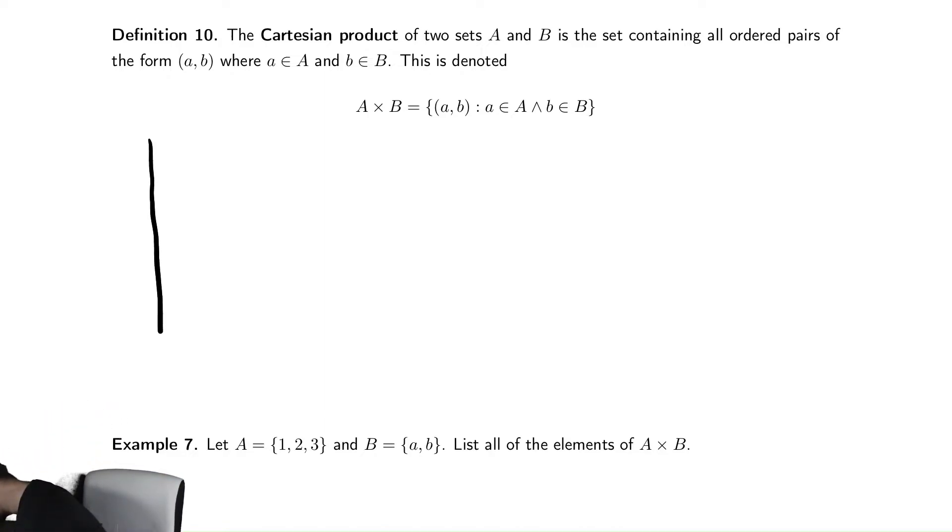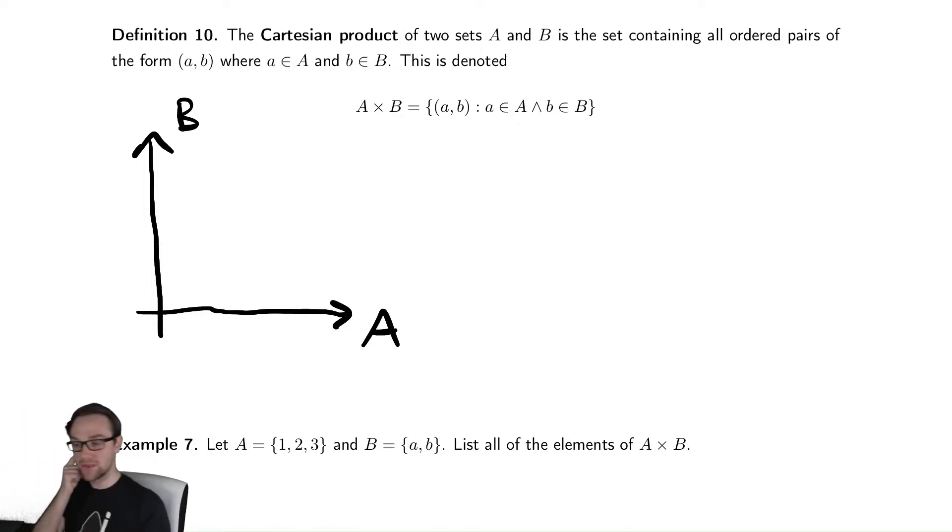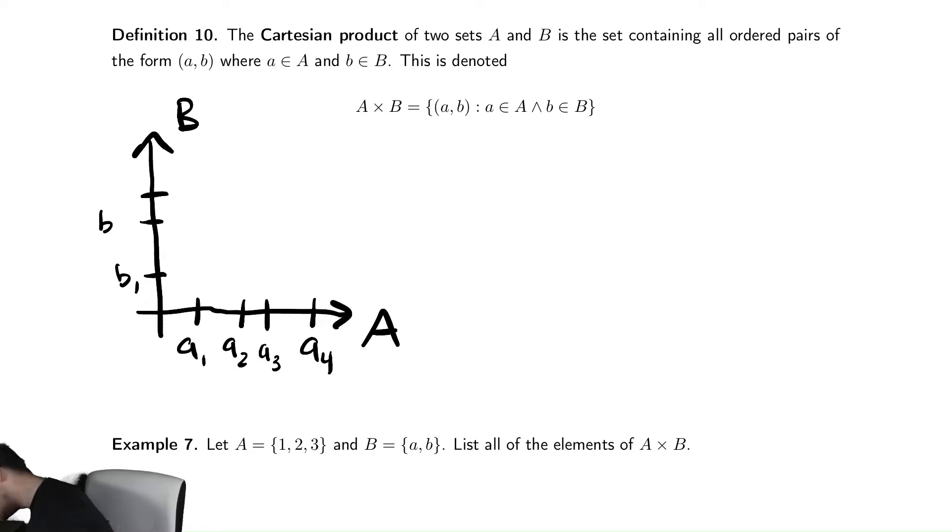The idea we're trying to capture here is that we have some set A and some set B, and we're trying to write down all of the ordered pairs. So there's a bunch of things in A, maybe A1, A2, A3, and A4. And in B, maybe there's some other things, B1, B2, B3.